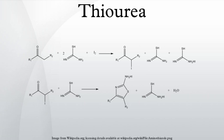Structure and bonding: thiourea is a planar molecule. The C=S bond distance is 1.60 Å ± 0.1 Å for thiourea. The material has the unusual property of changing to ammonium thiocyanate upon heating above 130°C. Upon cooling, the ammonium salt converts back to thiourea. Thiourea occurs in two tautomeric forms; in aqueous solutions the thione form predominates. The thiol form, also known as isothiourea, can be encountered in substituted compounds such as isothiouronium salts.